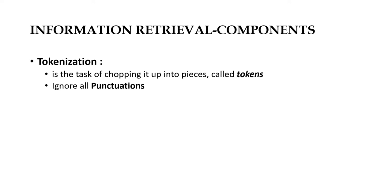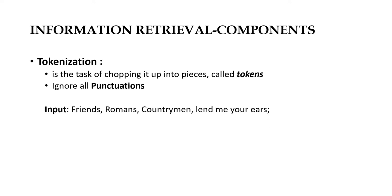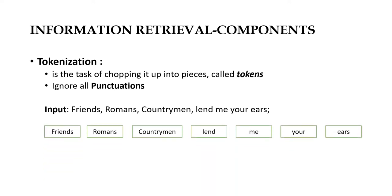The second important component of an information retrieval system is tokenization. It is the task of chopping up different words into pieces called tokens by ignoring all punctuations, including comma, colon, apostrophe, hyphenation, and white spaces. For example, if we consider the input 'friends, Romans, countrymen, lend me your ears,' the individual output tokens will become: friends, Romans, countrymen, lend, me, your, ears.